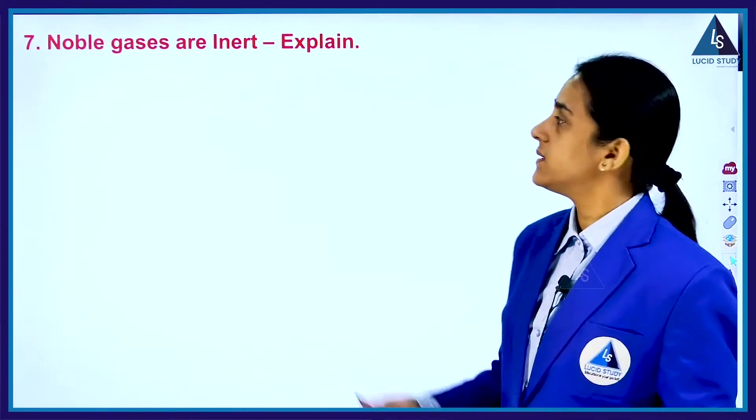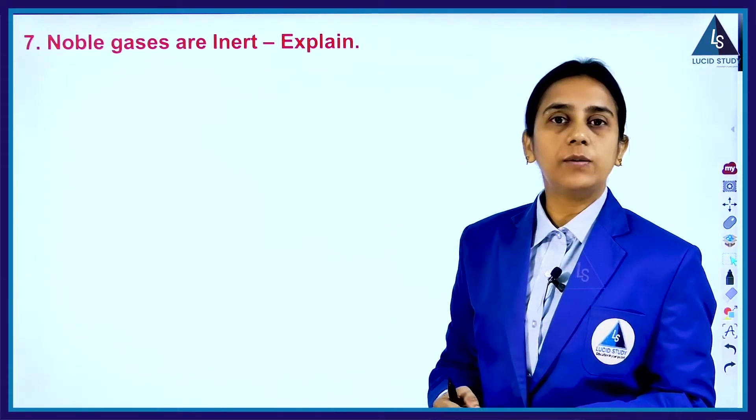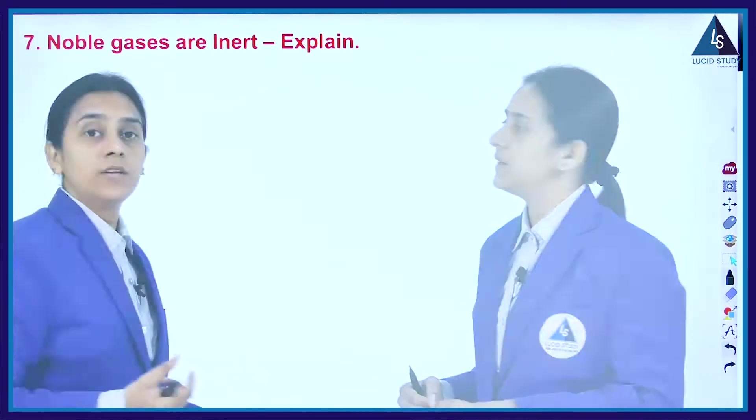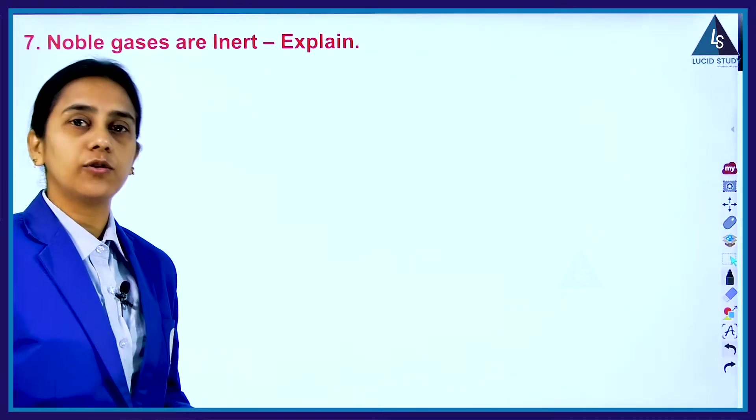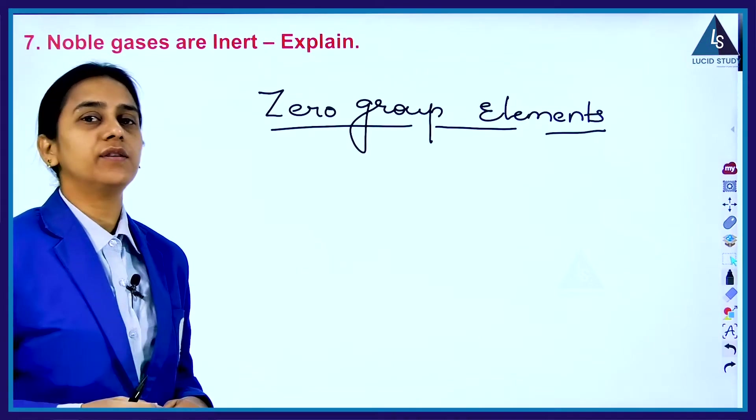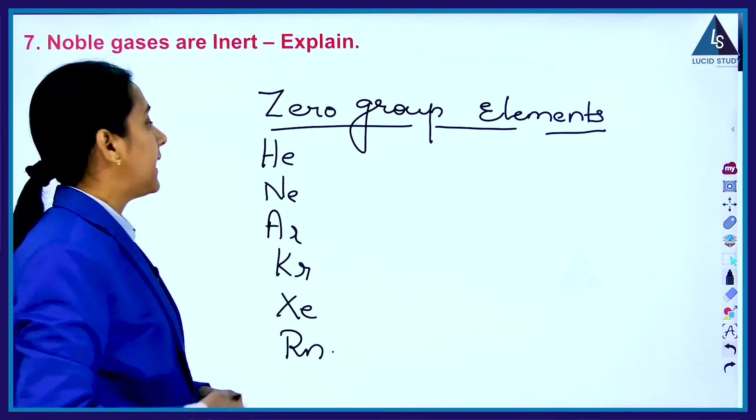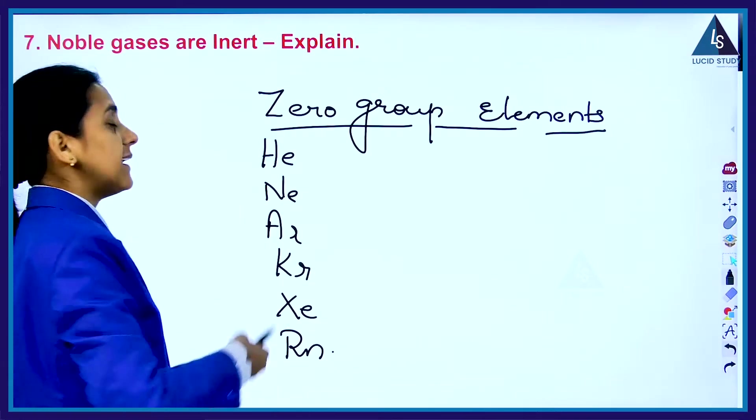The next question is: Noble gases are inert. Explain why the noble gases are inert in nature. Noble gases are also called eighth group elements or zero group elements. It involves helium, neon, argon, krypton, xenon, radon. These are the elements involved in the noble gases and these are inert in nature.